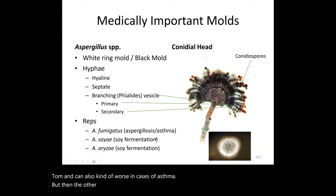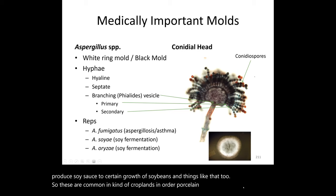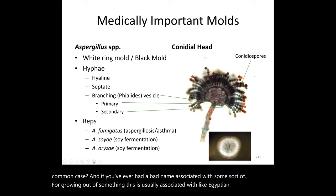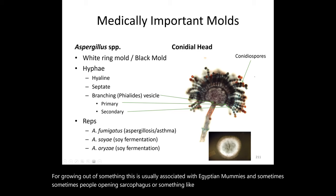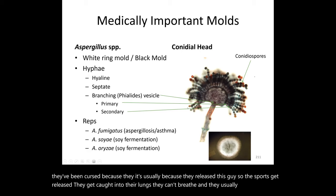Other Aspergillus species include A. sojae and A. oryzae, which are involved in soy fermentation — producing soy sauce and cultivating soybeans. These are common in croplands and among horticultural workers. Interestingly, the infamous 'curse of the pharaohs' associated with Egyptian mummies is typically attributed to Aspergillus spores released from a sarcophagus — the spores enter the lungs, cause breathing failure, and death. No curse — just fungus.